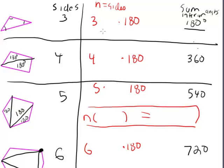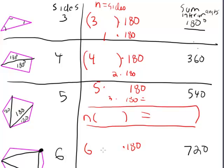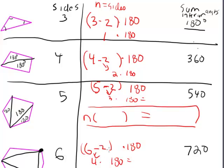Six times 180 doesn't equal 720 directly, but what can we do to three to then multiply by 180 to get 180? We know it's really one times 180 that gives us 180. Two times 180 gives us 360. Three times 180 gives you 540. Four times 180 gives you 720. So what are we doing to n? Three minus two gives one, four minus two gives two, five minus two gives three, six minus two gives four. It's the number of sides minus two!